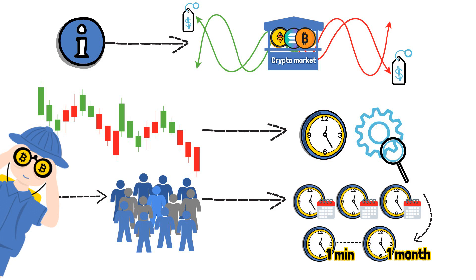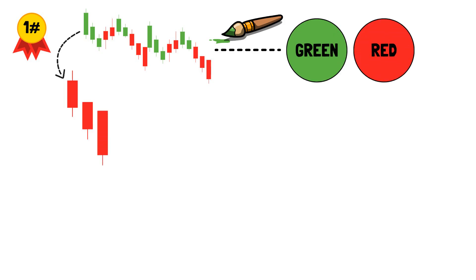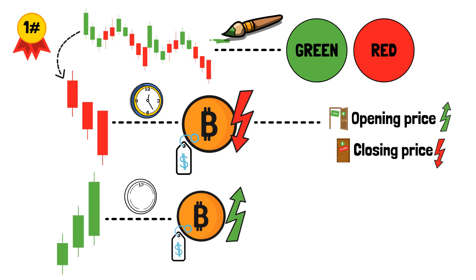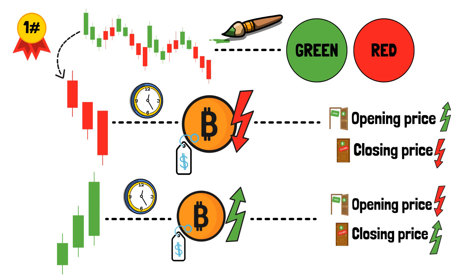Now, let's take a look at how to read candlesticks. First of all, candlesticks come in two colors, green and red. A red candlestick means that the cryptocurrency's price decreased during the said trading period. To be a bit more precise, it shows that the crypto's closing price was lower than the opening price. A green candlestick means that its price increased during the same trading period. Similarly, it shows that the coin's closing price was higher than the opening one.